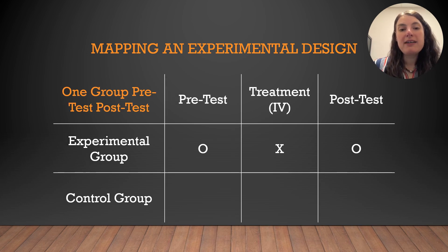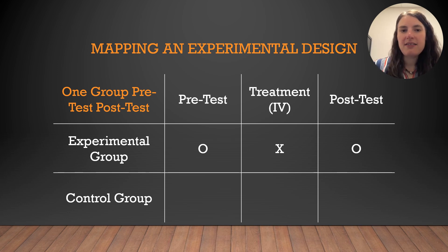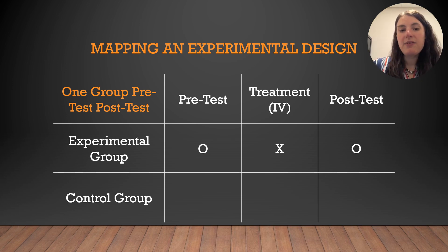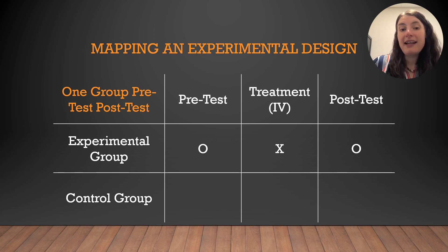Static group comparison is a pretty common quasi-experimental design. Another common one is the one-group pretest post-test, which is mapped exactly how it sounds. Here we gather data only from an experimental group, so everyone in the sample will receive the treatment. This type of design allows us to do the before and after comparison that's missing from the static group design, but it doesn't allow us to control for outside variables that may cause spuriousness in our data — so that's a big concern.